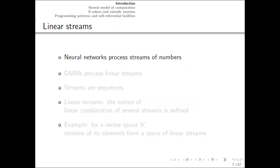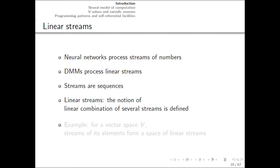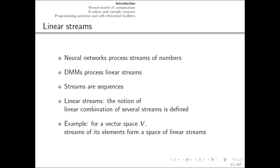The cornerstone of this approach is the notion of linear streams. Neural networks process streams of numbers. Dataflow matrix machines process linear streams. So what is a linear stream? Streams are sequences, and linear streams are such sequences for which the notion of linear combination is well defined. For example, consider a vector space and streams of its elements form a space of linear streams.